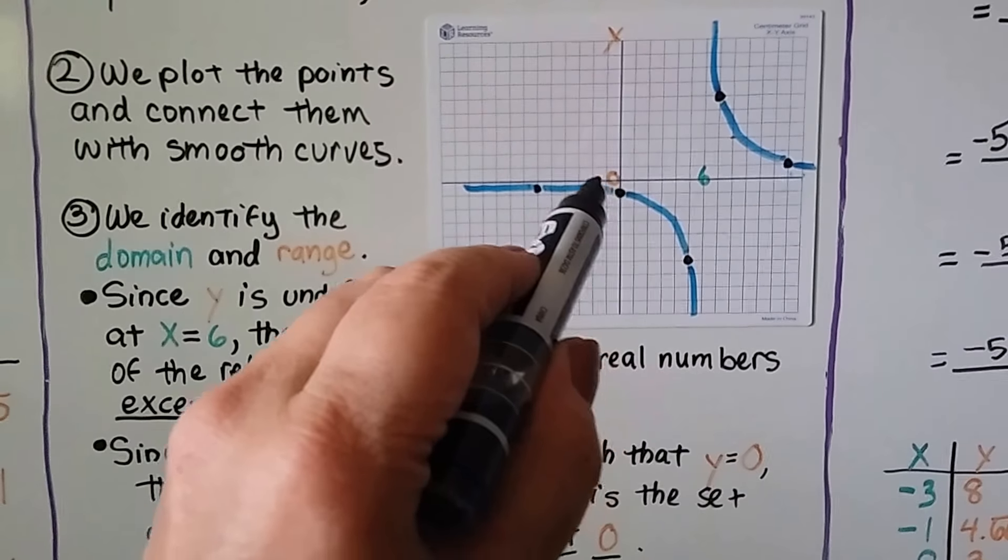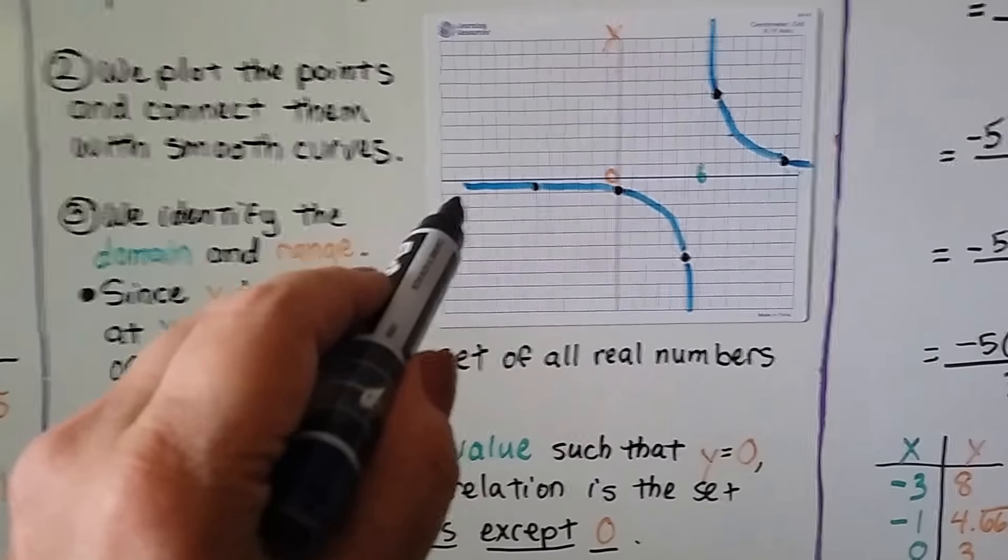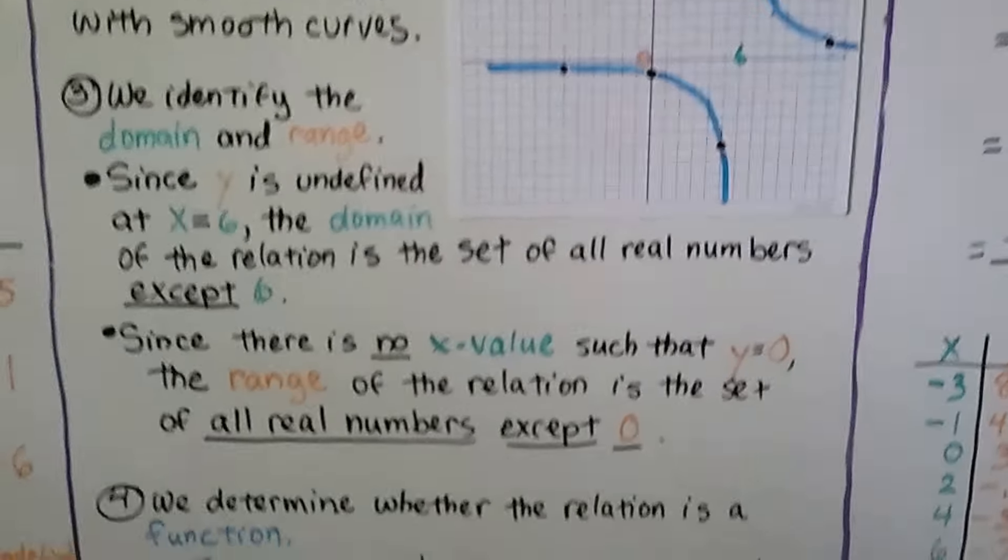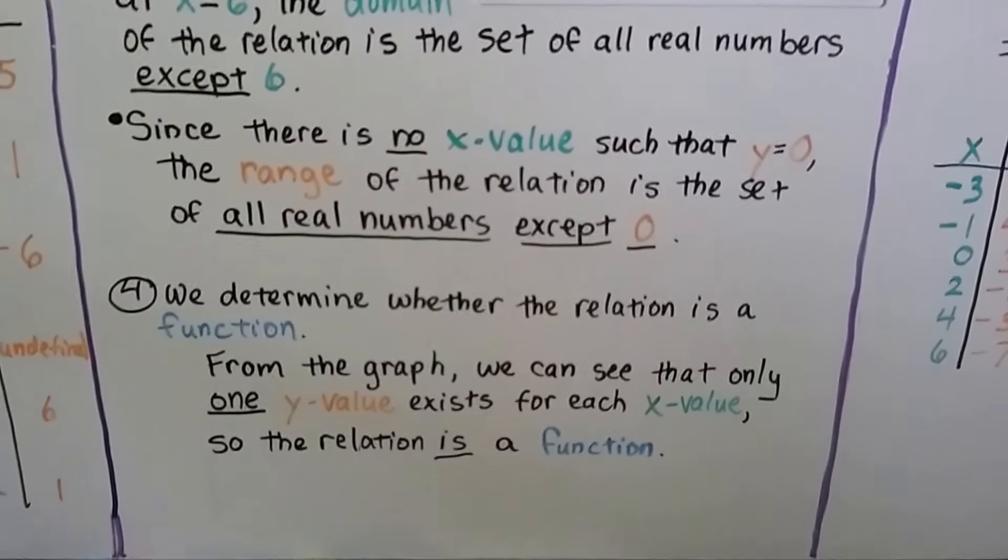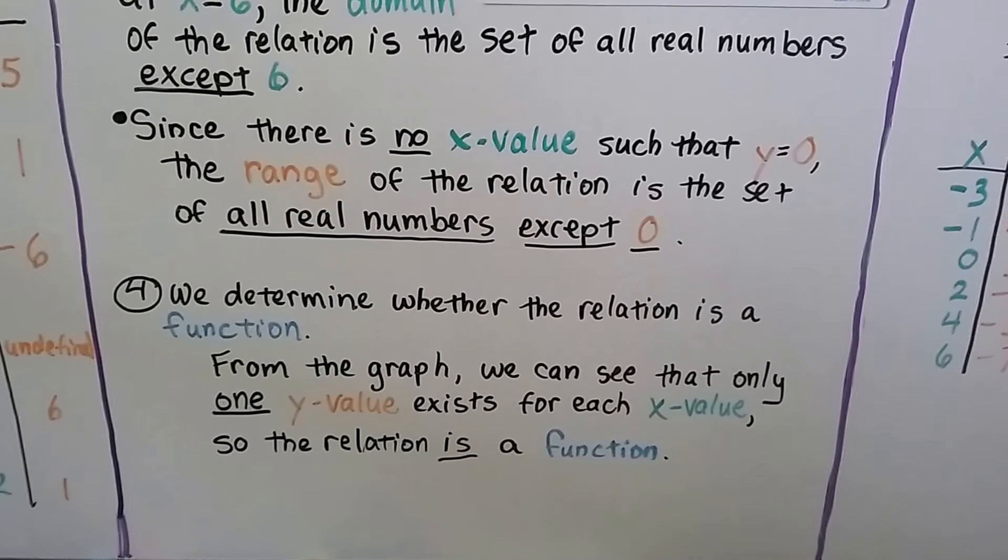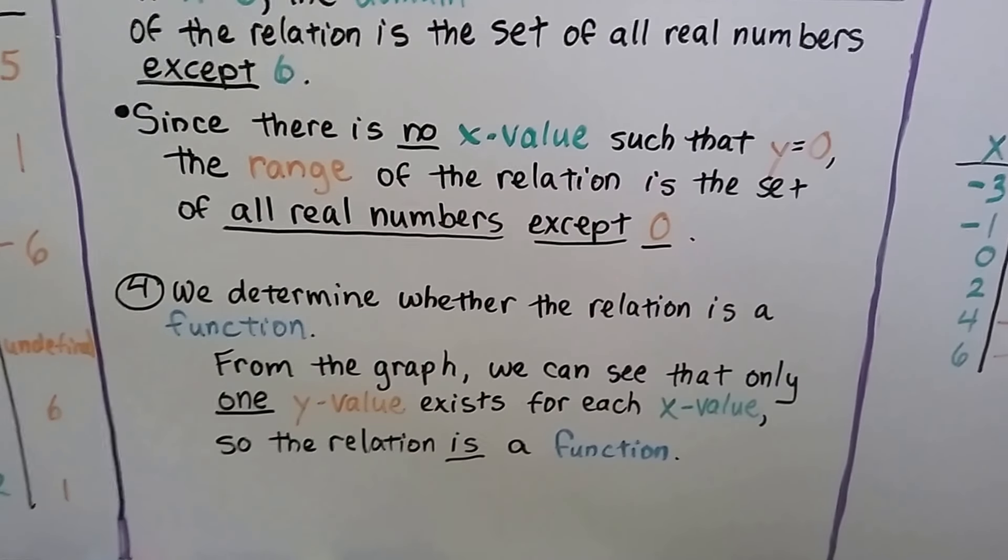So for y, it gets close to the 0 for y, but it doesn't quite touch it. And same here. It's going to get close to the 0 for y, but not touch it. And we determine whether the relation is a function. From the graph, we can see that only one y value exists for each x value. So the relation is a function.